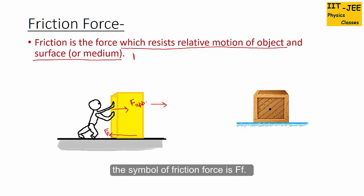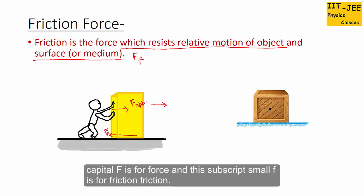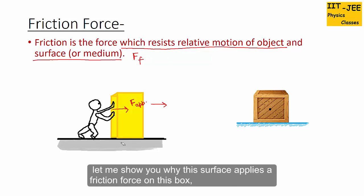The symbol of friction force is FF — F is for force and the subscript f is for friction. So it is written as FF for friction force.